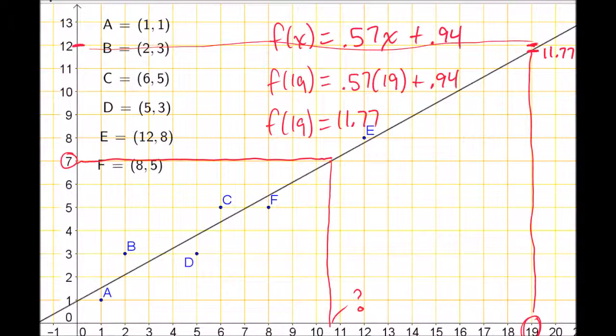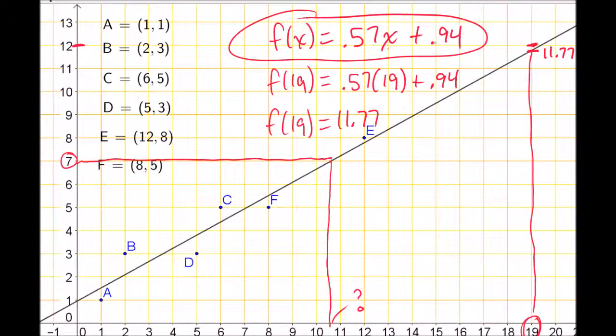So I'm going to use my function notation to answer that question. My function is f(x) equals 0.57x plus 0.94. I want to know when the function produces the value of 7. So I'm going to write 7 for the f(x), and I'm going to say that equals 0.57x plus 0.94. What I'm going to do is solve this for x, and that will answer the question, which value of x produces a 7.